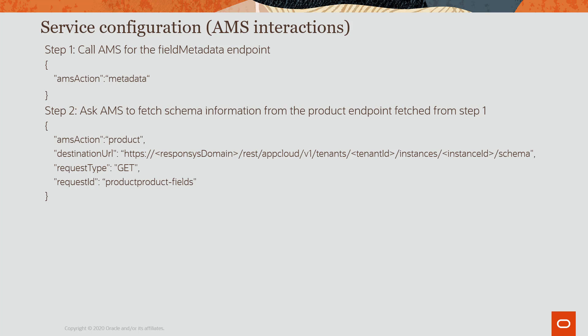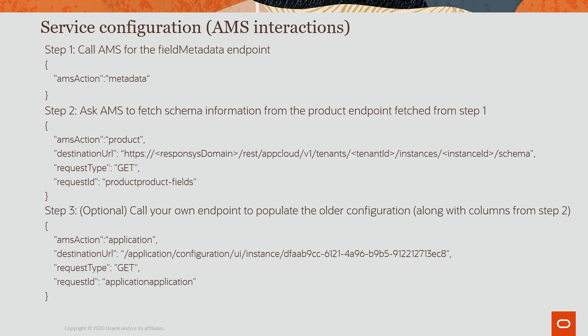Once the app has all the fields from AMS, step 3 is optional. You can then call the app's own endpoint to check if an older configuration exists for the service instance ID, similar to what we saw during app configuration. The app can then display a form or dropdown of all the fields the marketer can select to configure the service.